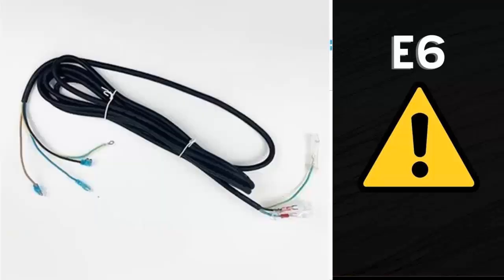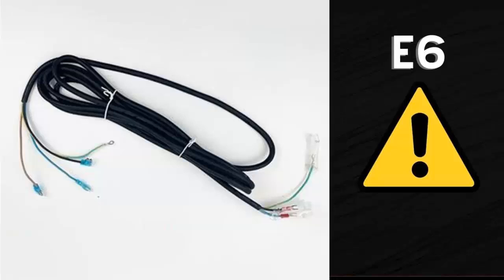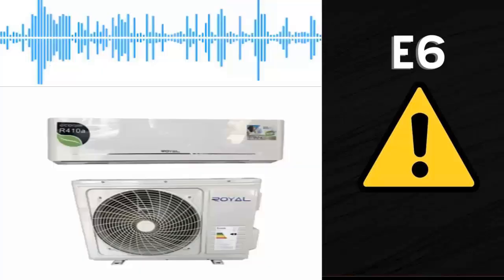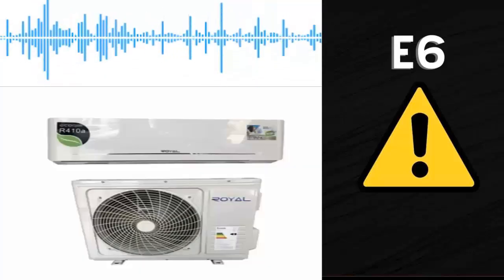Step 4: If the issue persists, you should install a temporary communication cable, only on the signal line — which is one of the three wires that the wiring connecting the internal and external units carries. This can be single-strand telephone wire without splices. If, during testing, you find that the equipment starts operating normally, it means you have a problem with the wiring and you should replace it entirely, making sure it has no splices.